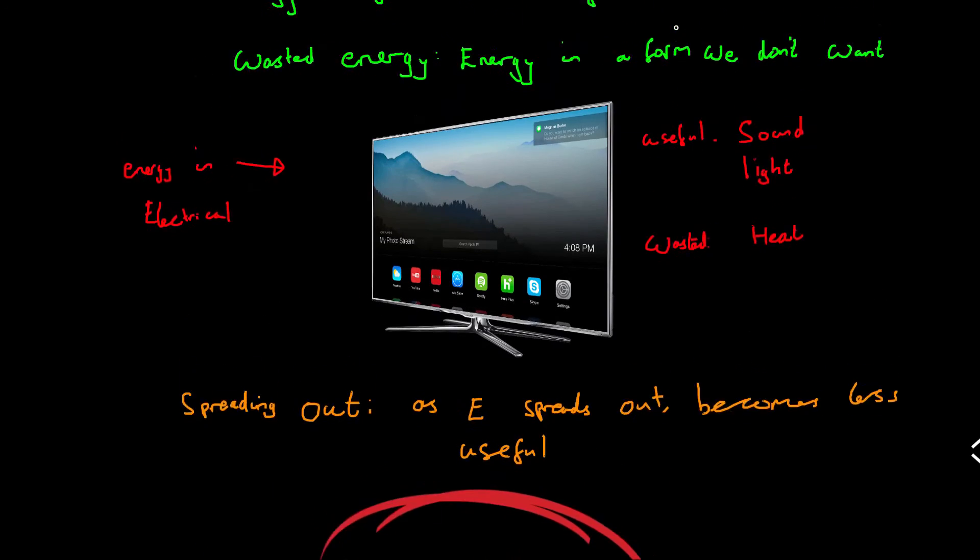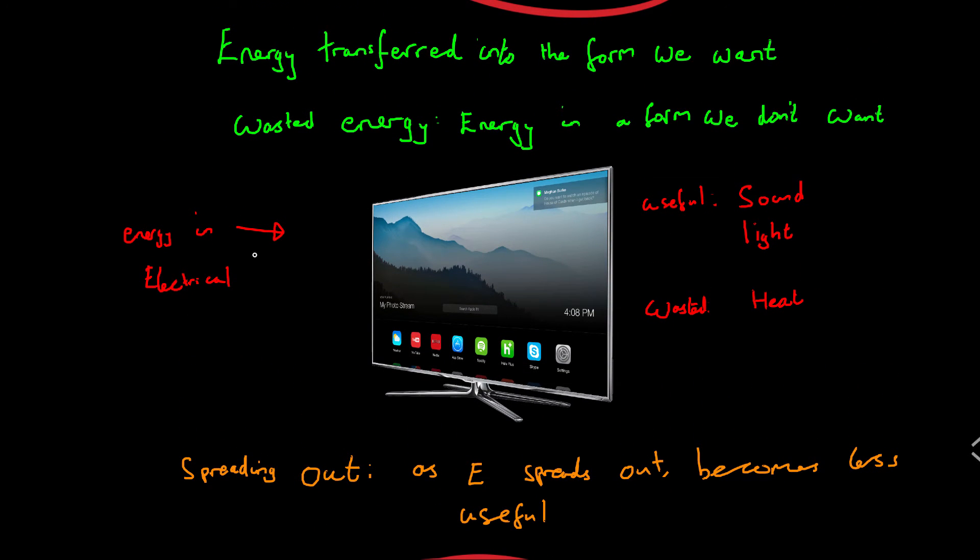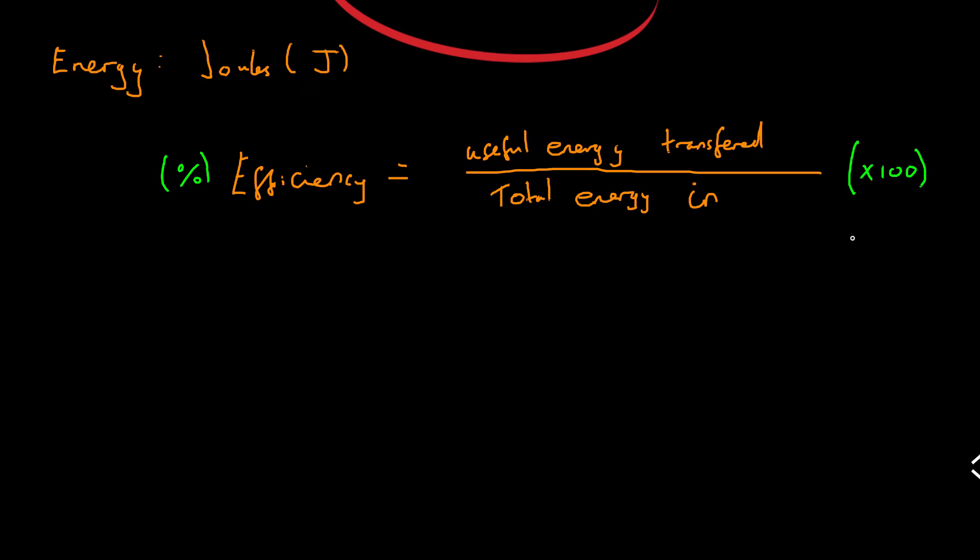Now let me just give you a quick example using this TV. Let's say the amount of electrical energy coming in is 10 joules. Now what if we got two joules of sound out of the TV, we got six joules of light out of the TV, and we got two joules of heat out of the TV. Now that means that all the energy has been converted into sound, light and heat. And so our total useful energy is these two, so that's going to be eight. And our total energy in is 10.